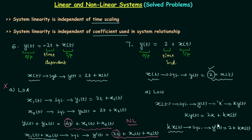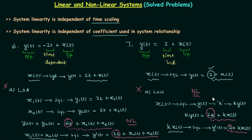Comparing the two results: k·y(t) = 2k + k·x(t), and y'(t) = 2 + k·x(t). Here we have 2k versus 2, so the results are not the same. The system is not following the law of homogeneity. Since it violates the law of homogeneity, the principle of superposition is violated and the system is non-linear.